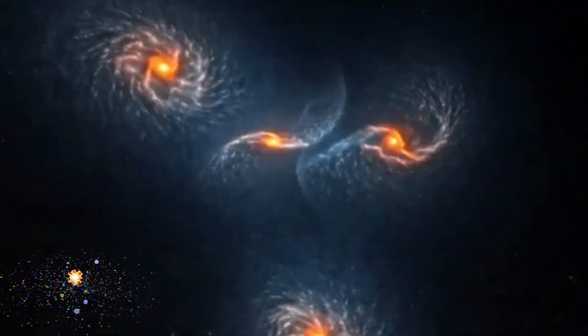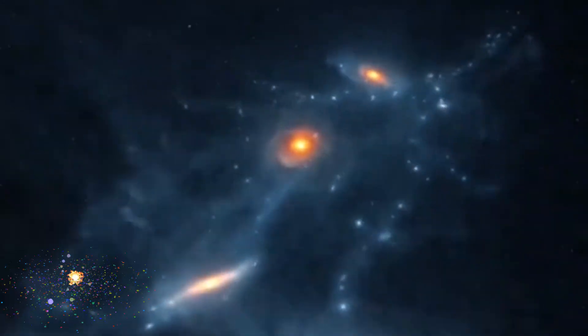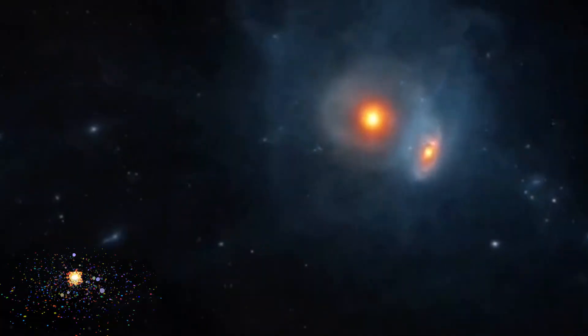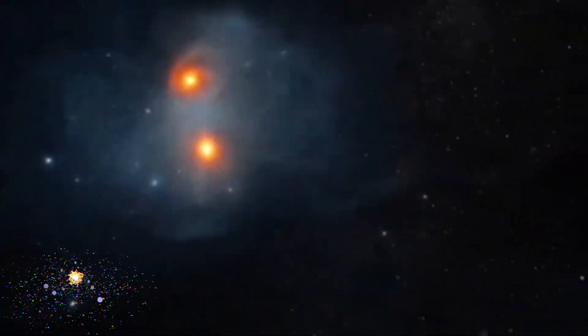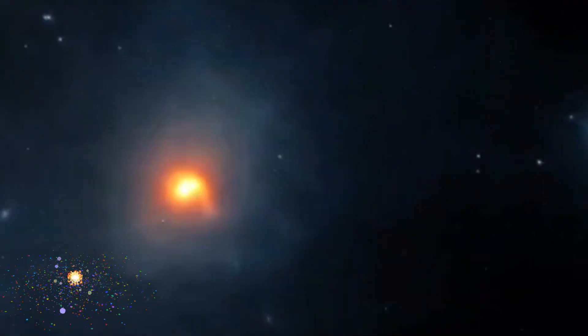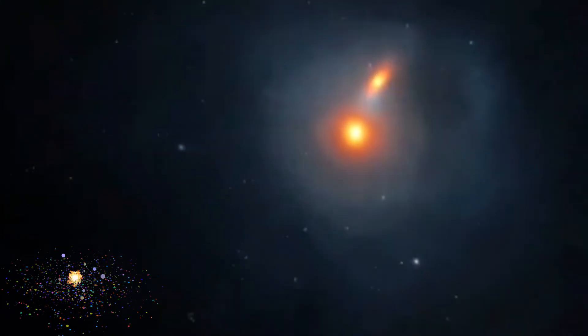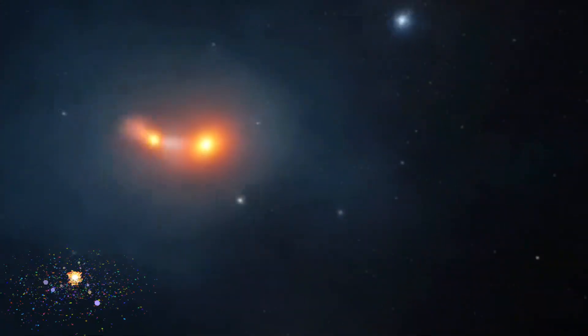A galaxy built by cannibalism. Andromeda's halo is full of stellar streams, ghostly ribbons of stars. These are the remains of smaller galaxies that Andromeda devoured over billions of years. It's a galactic predator. And we've seen it in the act of eating tiny galaxies like M32P. So in a sense, Andromeda is made of hundreds of galaxies that once lived independently.